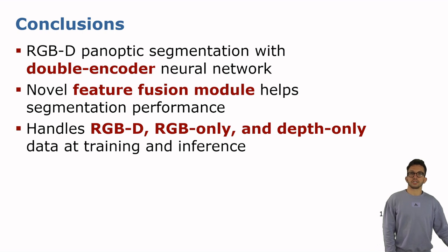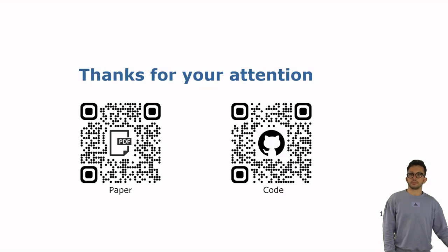In conclusion, I presented our work for RGBD panoptic segmentation, based on a convolutional neural network composed of two separate encoders. We also introduced a novel feature fusion module, which achieves state-of-the-art performance. Additionally, our network is able to deal with RGBD, RGB-only and depth-only data at both training and test time. Thank you for the attention, and don't hesitate to contact me in case you have any questions.